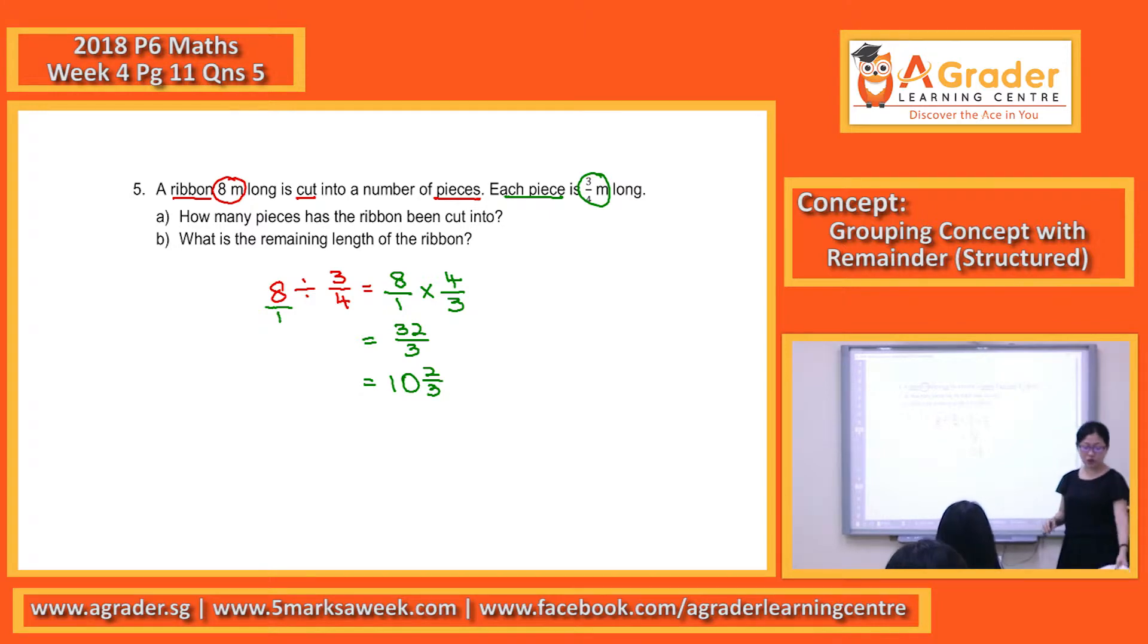So this mixed number of 10 and 2 thirds, you're not going to say that in terms of the pieces here, you're not going to tell us that we have 10 and 2 third piece like that. If we want pieces, it should always be in whole number.